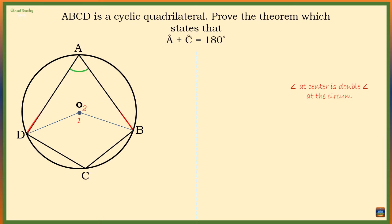Angle O1, which is at the center of the circle, is also subtended by arc BD. This means angle O1 is double angle A.